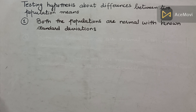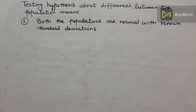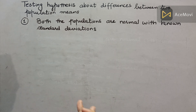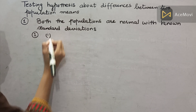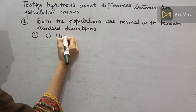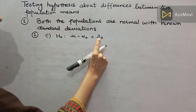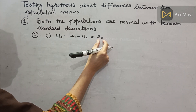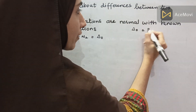The first step is to state the hypothesis. We call the specified value delta naught. Delta naught shows a specific value — mu1 minus mu2 equals delta naught, where delta naught is a specified value.